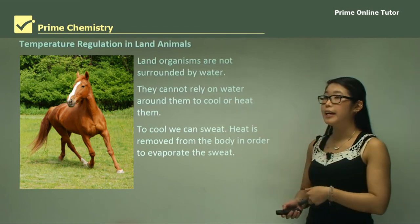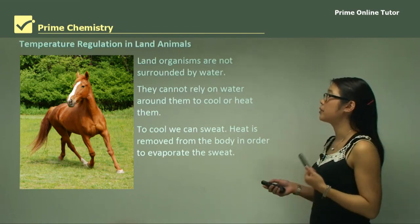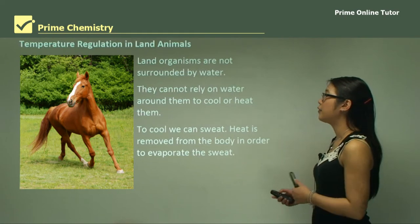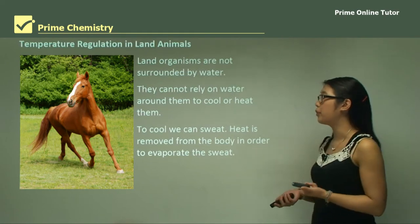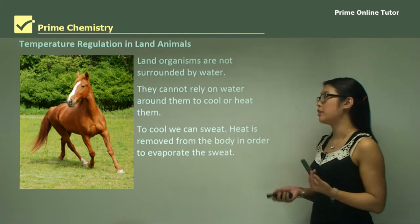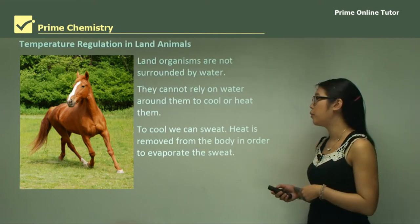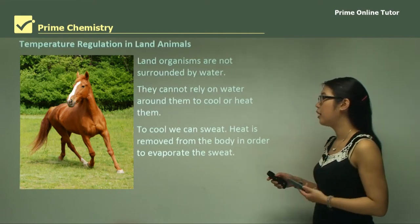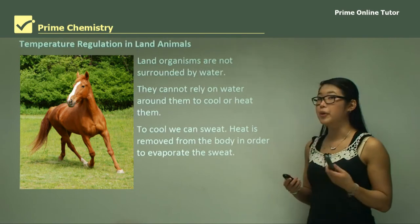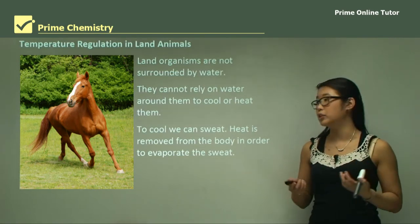For temperature regulation in land animals, land organisms are not surrounded by water like aquatic animals and therefore they cannot rely on water to cool them. To cool themselves, land animals sweat. Heat is removed from the body in order to evaporate the sweat, and therefore it cools the organism.